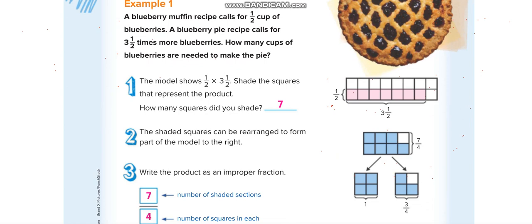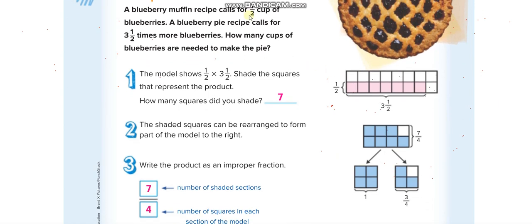Let us take the first example here. You have to multiply one half with this mixed number. So this one is already a fraction you don't need to do anything but this is a mixed number so first you have to convert it into an improper fraction.